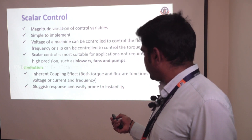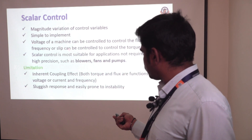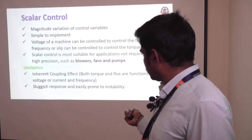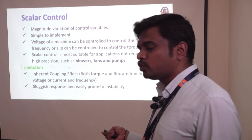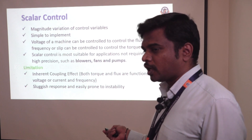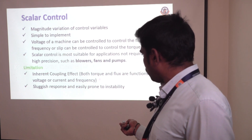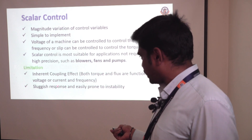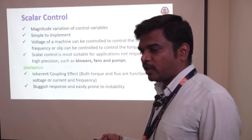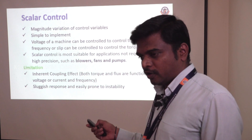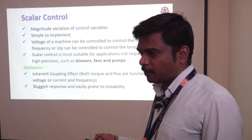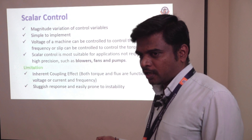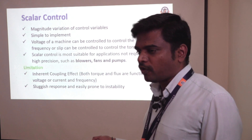When voltage is varied to control the flux, torque is also varied. Due to this recurrent coupling effect, both torque and flux are functions of voltage and current. So when one parameter is varied, the other parameter is also varied due to the coupling effect, making speed control inaccurate.